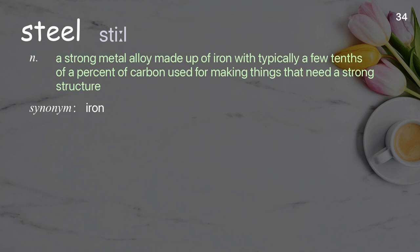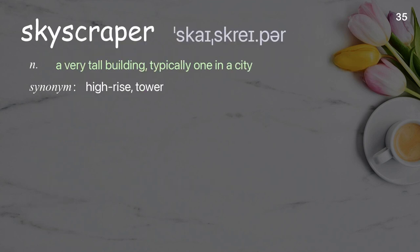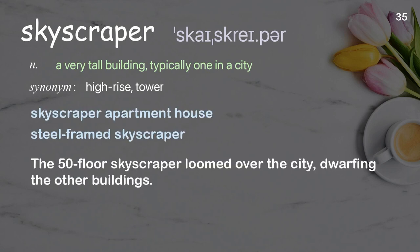Steel: a strong metal alloy made up of iron with typically a few tenths of a percent of carbon, used for making things that need a strong structure. Examples: magnetic steel, steel-framed skyscraper. The 50-floor skyscraper loomed over the city, dwarfing the other buildings.